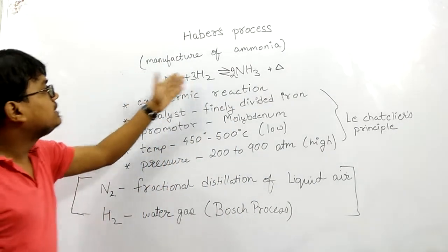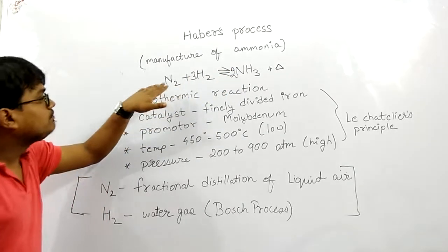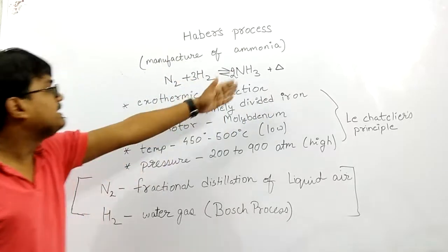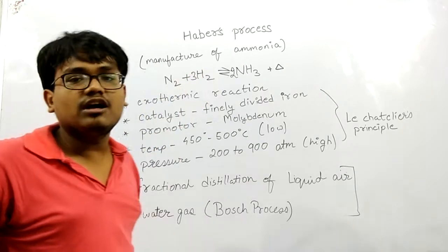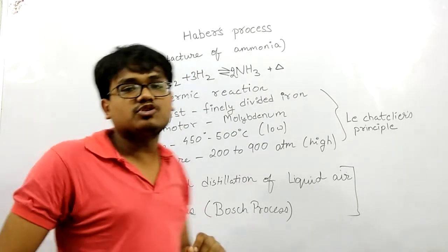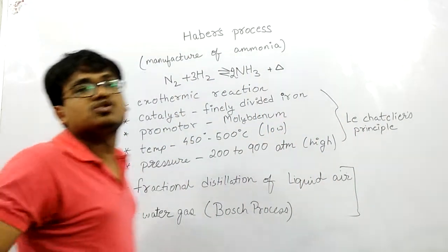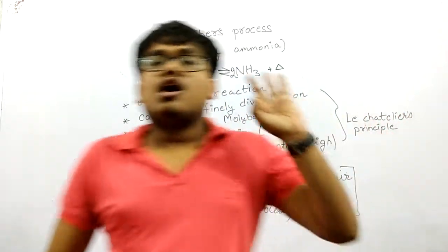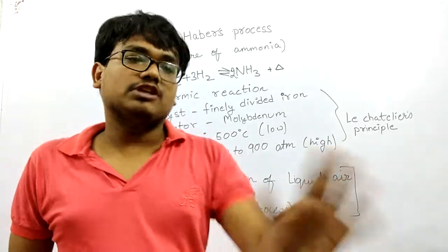One mole of nitrogen and three moles of hydrogen gives two moles of ammonia, so the volume is decreased in the forward direction. That means there is an increase in pressure in the forward direction. Le Chatelier's principle governing Haber's process requires high pressure and low temperature. Further applications you will study in higher classes.